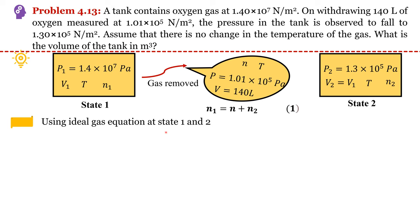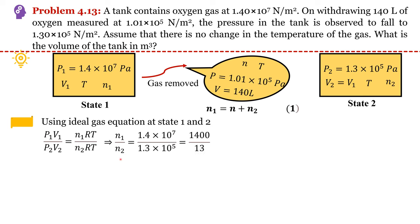Using the ideal gas equation at state 1 and state 2, we divide the ideal gas equations to get P1V1 divided by P2V2 equals n1RT1 divided by n2RT2. Since temperature is constant RT cancels, and since V1 equals V2 they cancel too. The values of P1 and P2 are given, so n1 by n2 comes out as 1400 divided by 13. We then write n1 equals 107.69 n2, calling this Equation 2.